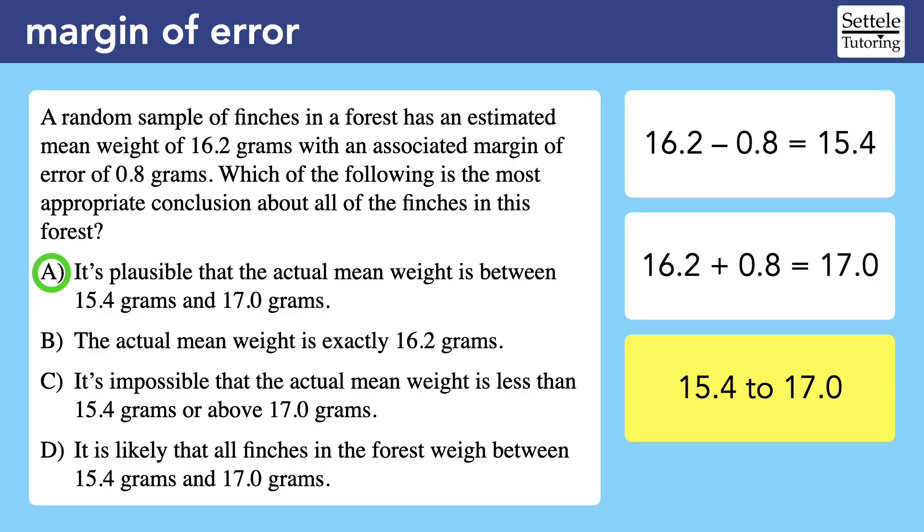Many correct answers for margin of error questions will sound a lot like this one, but let's explain why the wrong answers are wrong. Choice B is wrong because of the word exactly. Our survey found that the mean was 16.2, but that number is unlikely to hold if we found and weighed every single finch in this forest. It's definitely possible that the actual mean is 16.2, but it's actually pretty unlikely. If we treat this like a reading passage question, choice B is too strong and choice A is better because it's weaker.